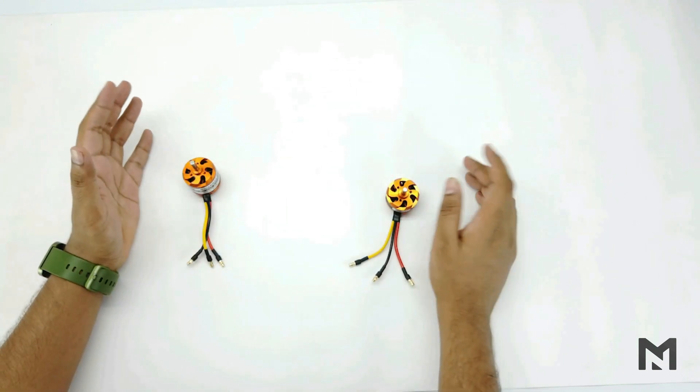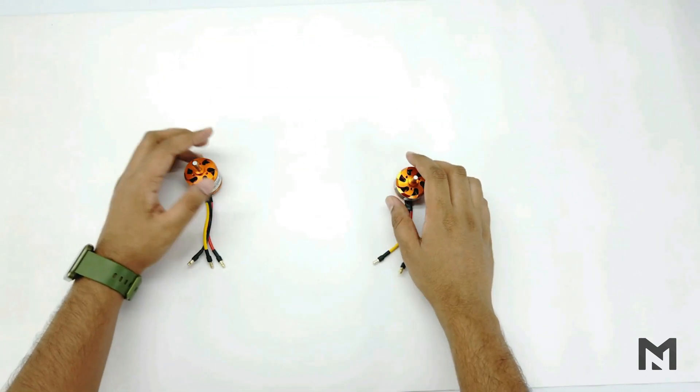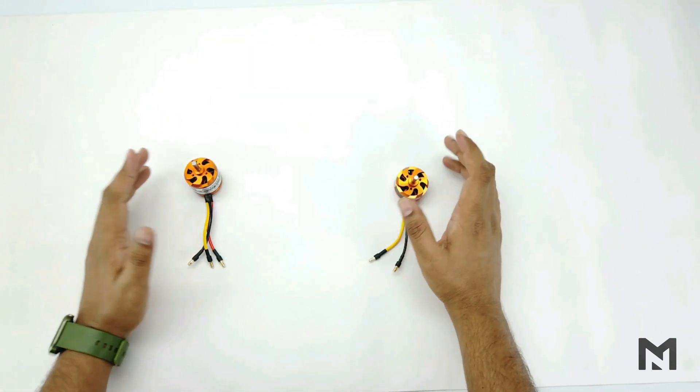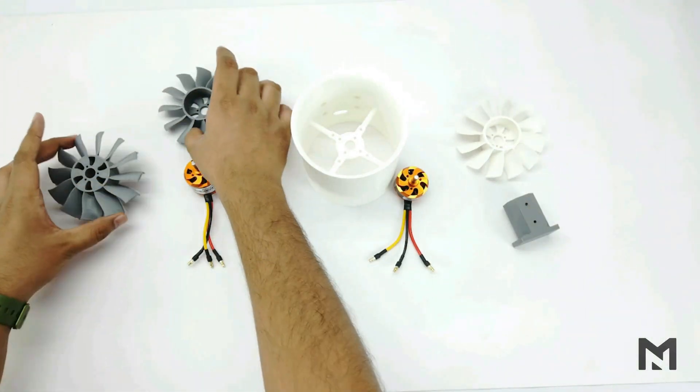I have already done a thrust test of these two motors. You can watch by clicking on the i button. I have already made a CAD model of ducted fan and printed its parts. These are its parts. I have provided the parts and motor link in the description.